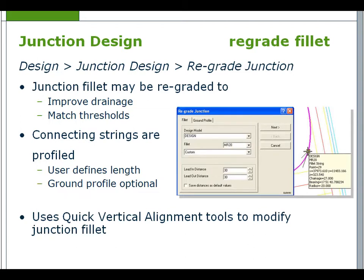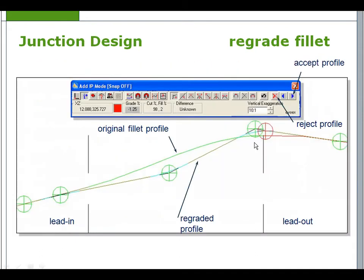If required, you can select regrade junction from the junction design toolbar. The junction fillet may be regraded to improve drainage or perhaps match thresholds. The user can define lengths for the connecting strings that are added to the profile. A ground profile can also be added. Quick vertical alignment tools are used to modify the junction fillet.